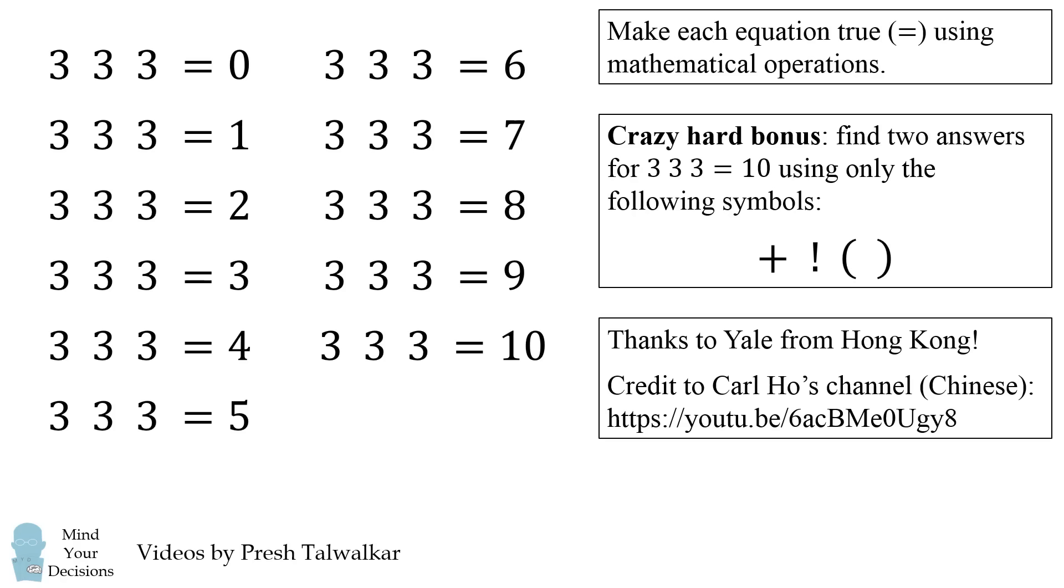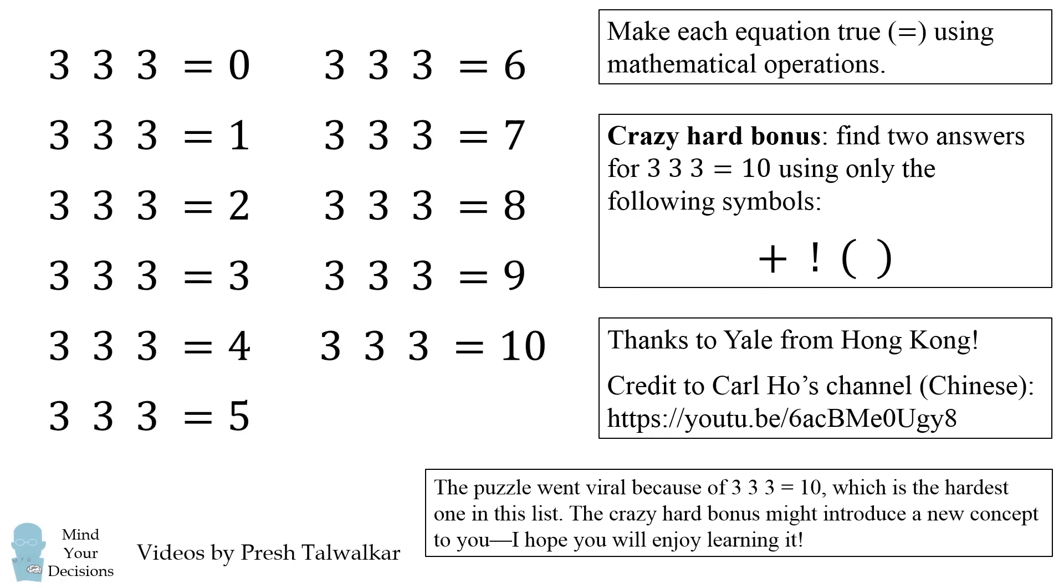I thank Yale from Hong Kong for suggesting this problem, and I give credit to Carl Ho's channel. His video in Chinese made this problem go viral in Hong Kong. The puzzle went viral because of 3 3 3 equals 10, which is the hardest one in this list. The crazy hard bonus might introduce a new concept to you, and I hope you will enjoy learning it.